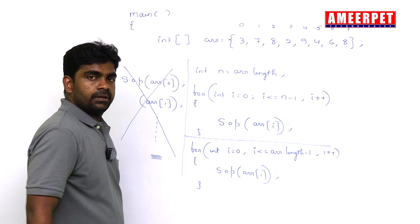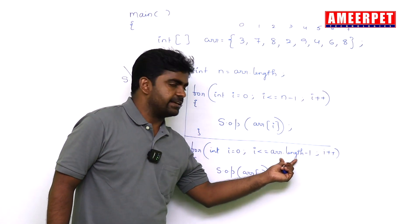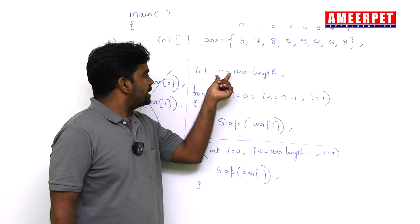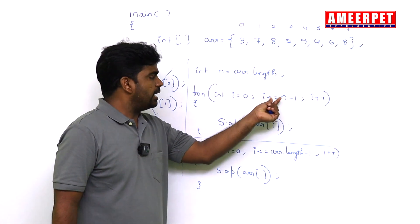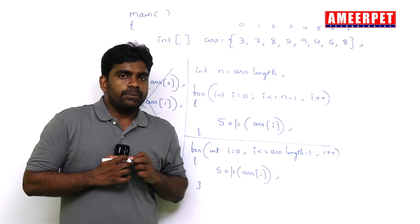It's the same. Here it is ar.length, means 8, 8 minus 1 is 7. But here, first we are collecting into one extra variable and minus 1. We are doing the same thing only.